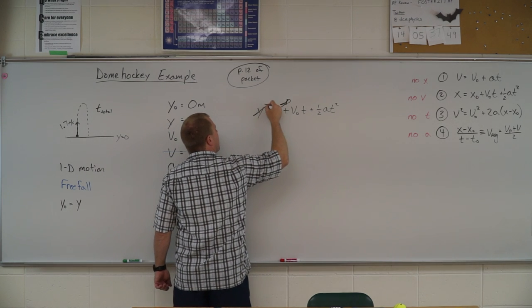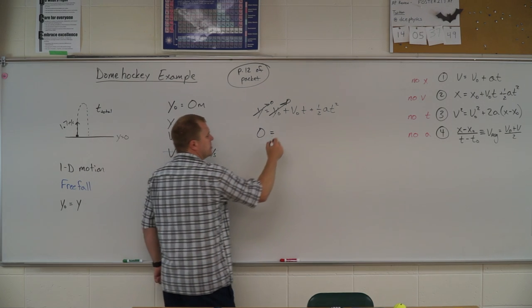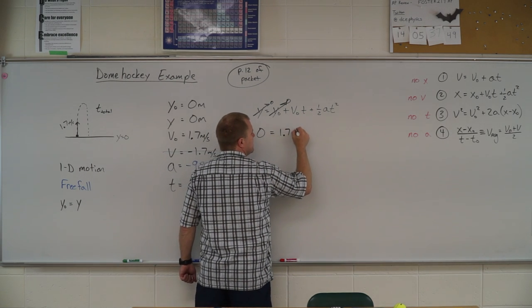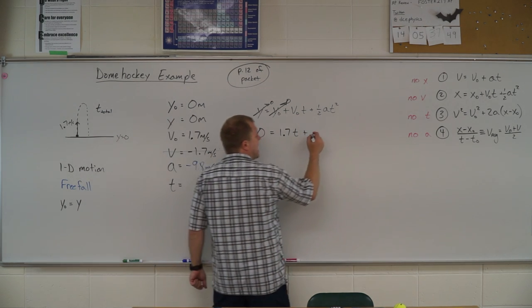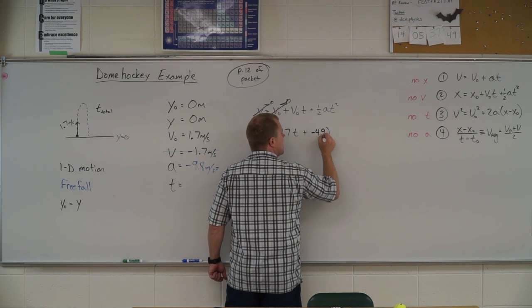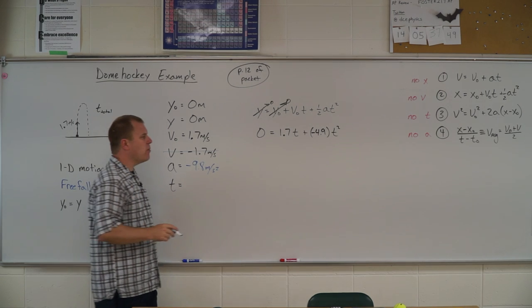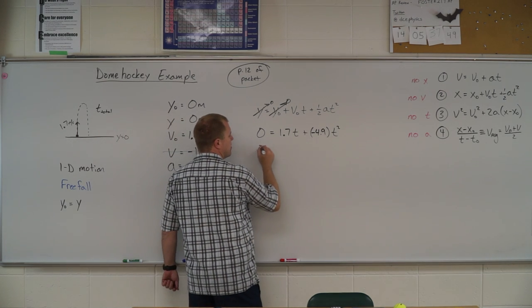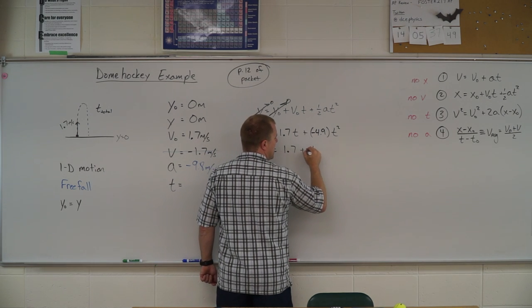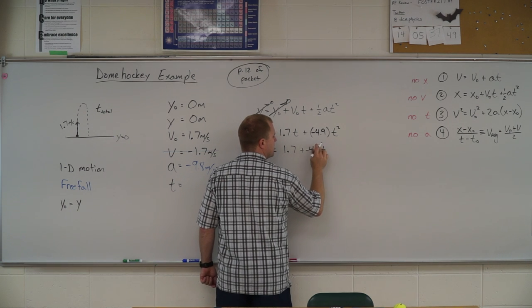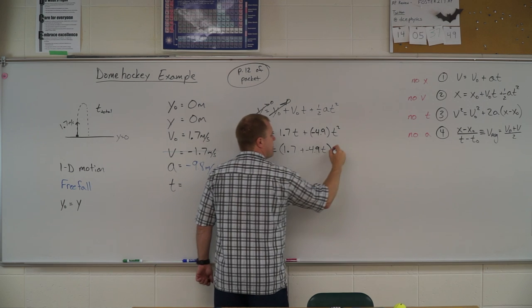I'm crossing out that zero. So now I have zero is equal to, and I'll plug in my numbers. So I have 1.7 t plus, and what's one half of negative 9.8? You're right, negative 4.9 t squared. How do I solve for t? This is that one that you solved in math class where you're going to factor a t out. So I get 1.7 plus negative 4.9 t, and I factored out a t.